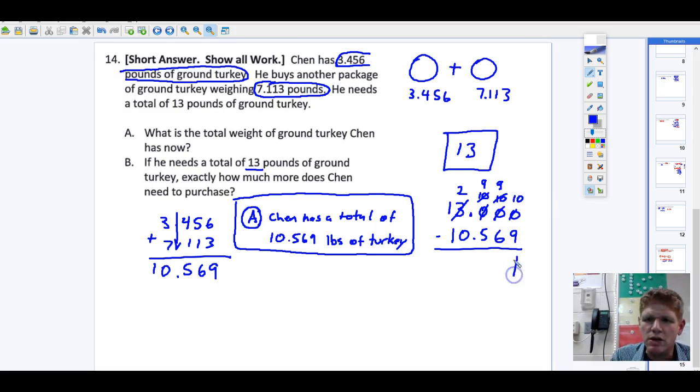10 minus 9 is 1. 9 minus 6 is 3. 9 minus 5 is 4. I've got to bring them down, because I lined them up. 2 minus 0 is 2. And 1 minus 1 is 0. So, my answer is 2.431.